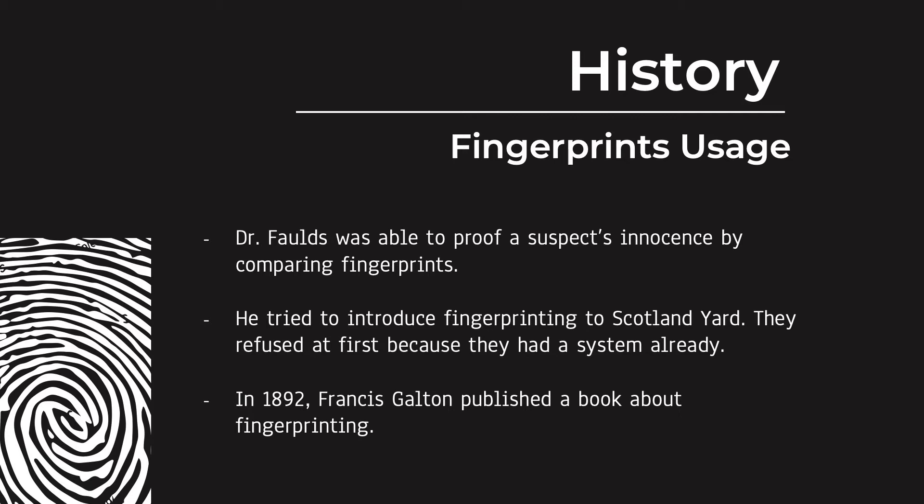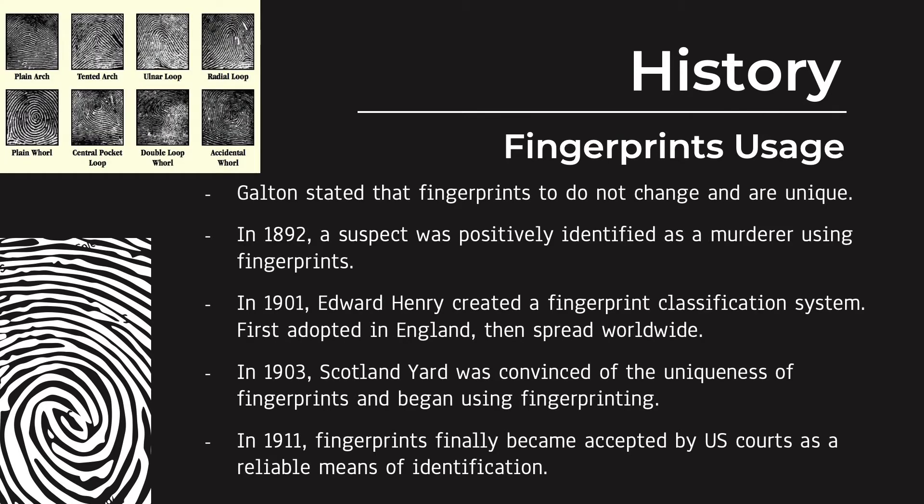That system proved to be flawed — the measurements they used were not unique. In 1892, Francis Galton published a book about fingerprinting. He described what fingerprints are, how they are made, how to collect them, and how to analyze them. Galton stated that fingerprints do not change and are unique.